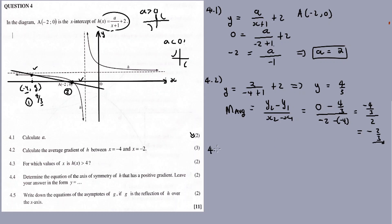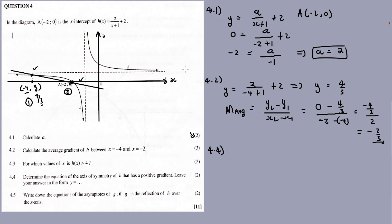4.4. This is basic stuff, guys. 11 marks in your pockets. Determine the equation of the axis of symmetry of h that has a positive gradient. Leave your answer in the form y equals mx plus c. Let me erase this.